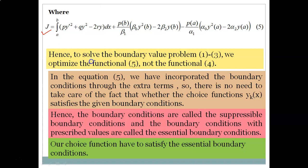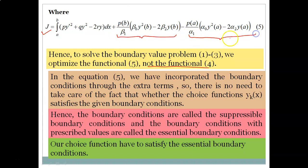Our main aim in such problems is to form a functional of this form and then apply Euler's equation. To solve the boundary value problem given in equations 1, 2, 3, we optimize the functional J (equation 5), not the original functional I (equation 4). In equation 5, the boundary conditions have been incorporated through the extra terms.